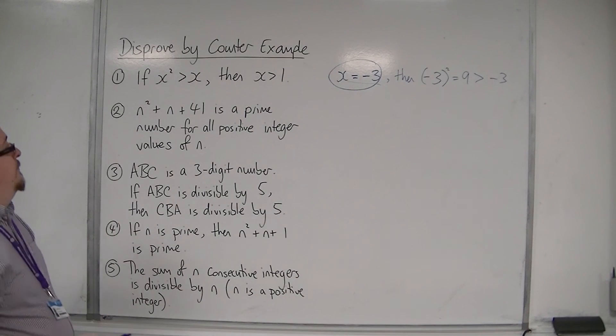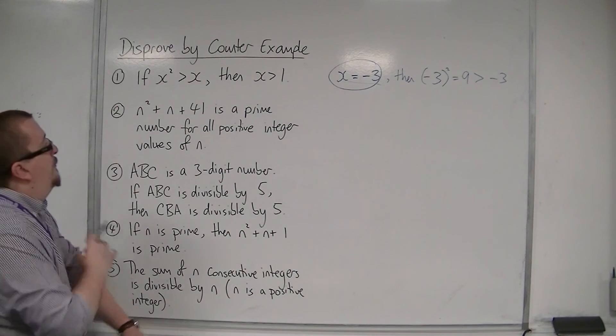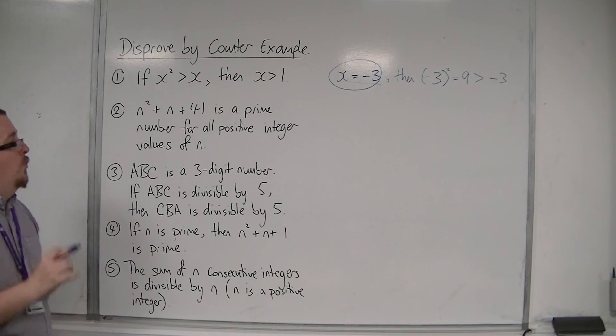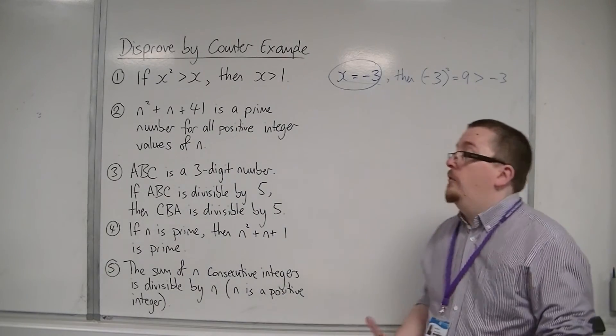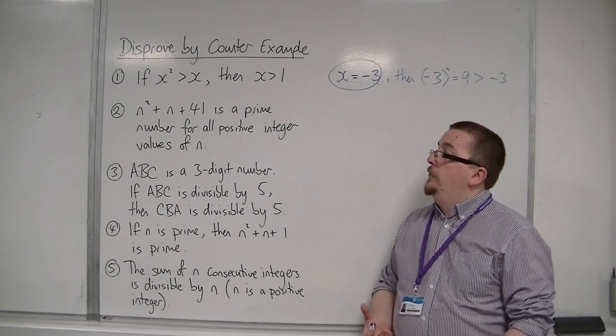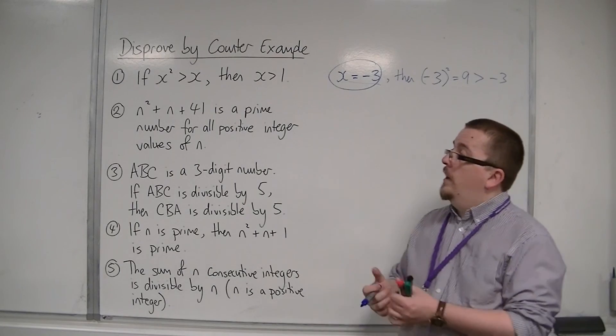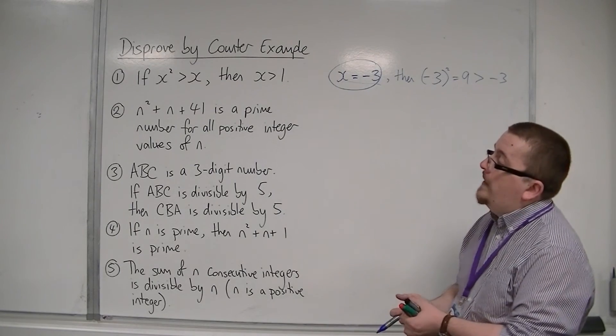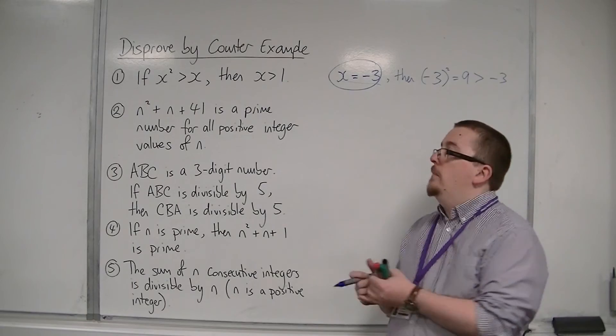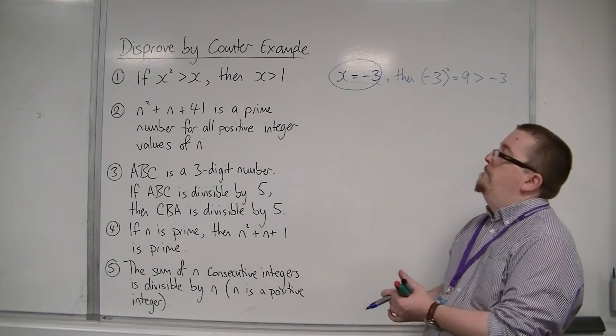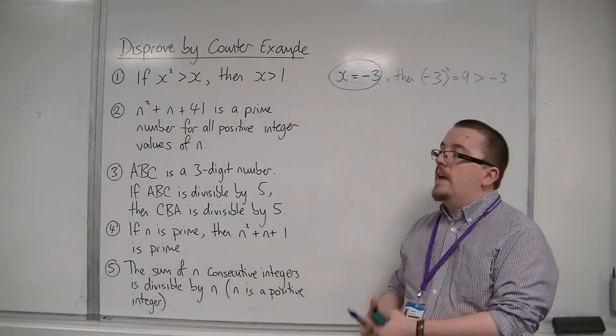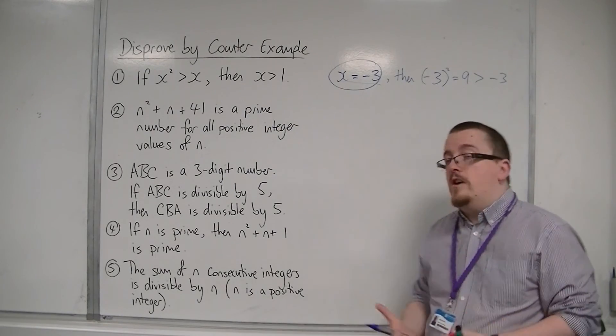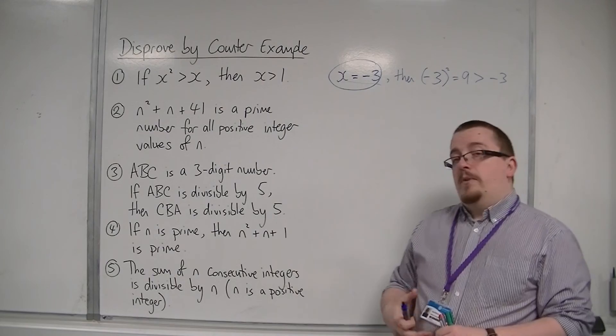Let's have a look at number 2. n squared plus n plus 41 is a prime number for all positive integer values of n. Now, normally, for these types of problems, it's useful to then go through putting in values of n. So you might try 1, and then you try 2, and then you try 3, and see what numbers you get and determine whether they are prime or not.